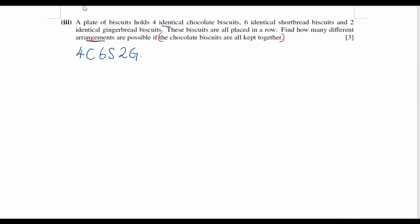So if I want to keep the items together, we put a circle on it. And then we start counting. So the 4 chocolate biscuits considered as one object. And there are 6 shortbread biscuits and 2 gingerbread biscuits. So all together we have 9 different items to be arranged. So number of ways, 9 factorial ways. Then whatever things keep together, they can still arrange among themselves.